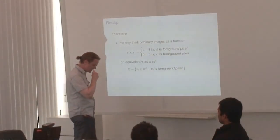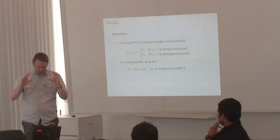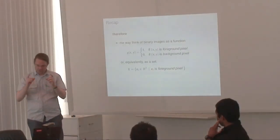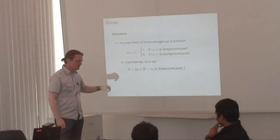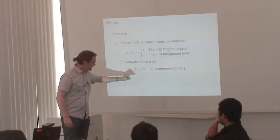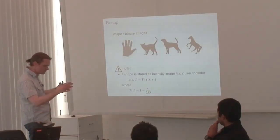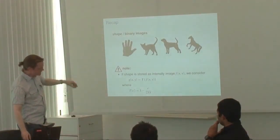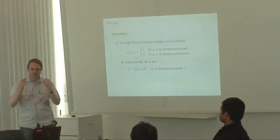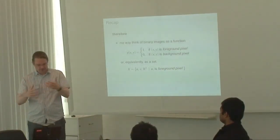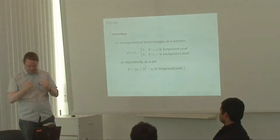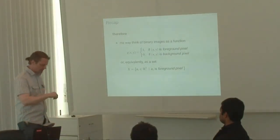The important thing is that in addition to viewing an image as a function, in the case of binary images we may also think of them as a collection of points. All the foreground pixels are a point in a set, and the background pixels are points not contained in the set. A visualization of such a set is just a binary image. This is why we look at them now — they are the easiest sets we may imagine in the context of image processing.